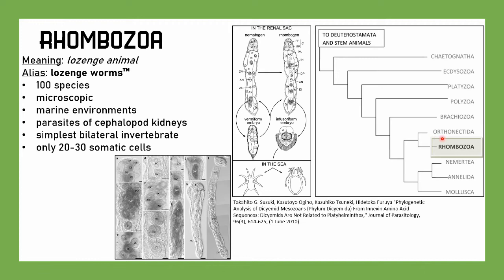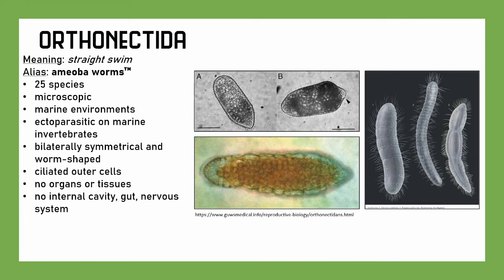Speaking of Orthonectida — we have the Orthonectida. It means 'straight swim.' They have no common name, so I'm trademarking them as amoeba worms, because they kind of look like amoeba. They're microscopic, in marine environments. They are very specific — they're ectoparasites on marine invertebrates. They're bilaterally symmetrical and worm-shaped, with ciliated outer cells. They have no organs, no tissues, no internal cavity, no gut, and no nervous system — like the lozenge worms, they are very simple.